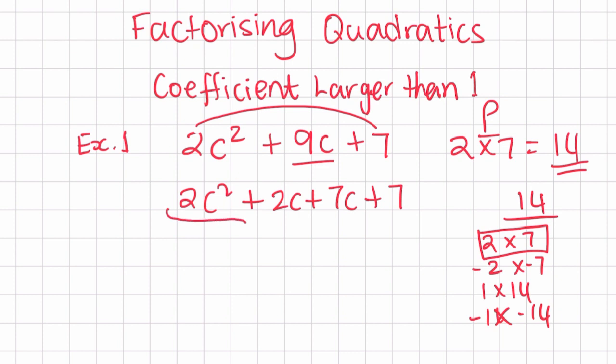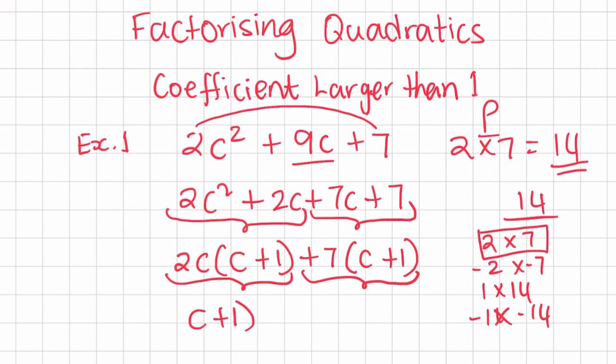Now we are going to factorize these expressions in two different parts. First, let's factorize 2c² + 2c. We can see 2 is common and c is common. The highest common factor is 2c. So inside the bracket, 2c² ÷ 2c is just c, and 2c ÷ 2c is +1, giving us 2c(c + 1). Let's factorize the second part. Common factor is 7. 7c ÷ 7 is c, and 7 ÷ 7 is 1, so 7(c + 1). We can see c + 1 is common. So the answer is (c + 1)(2c + 7).